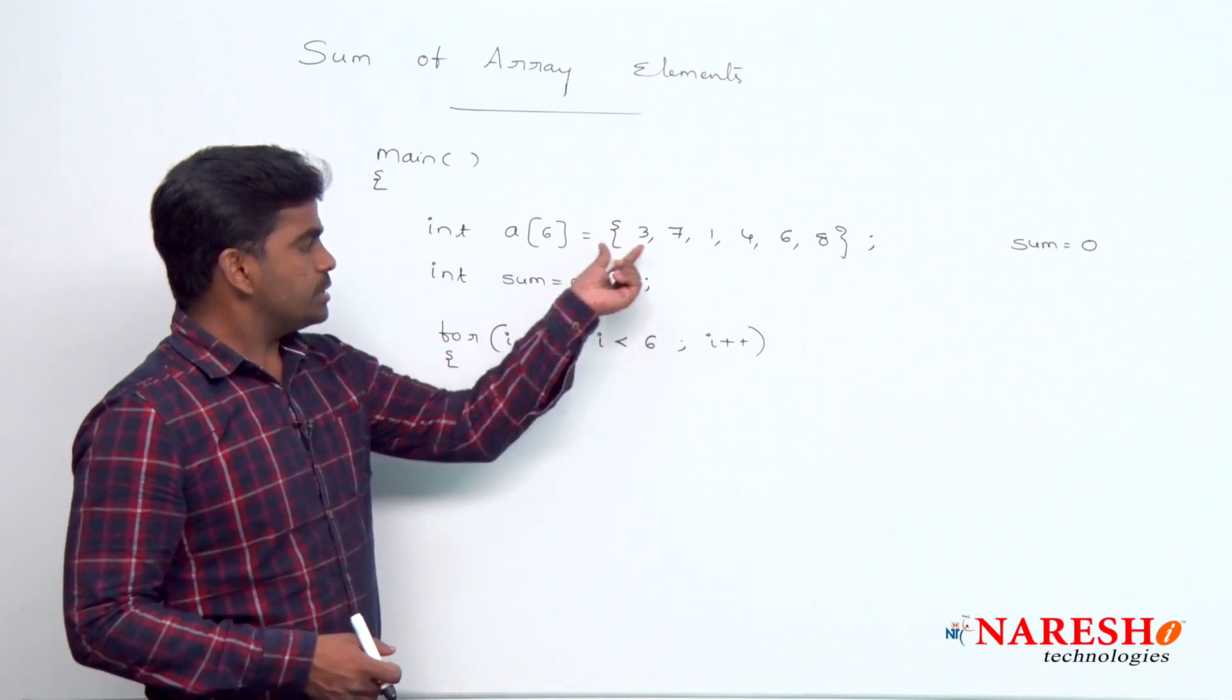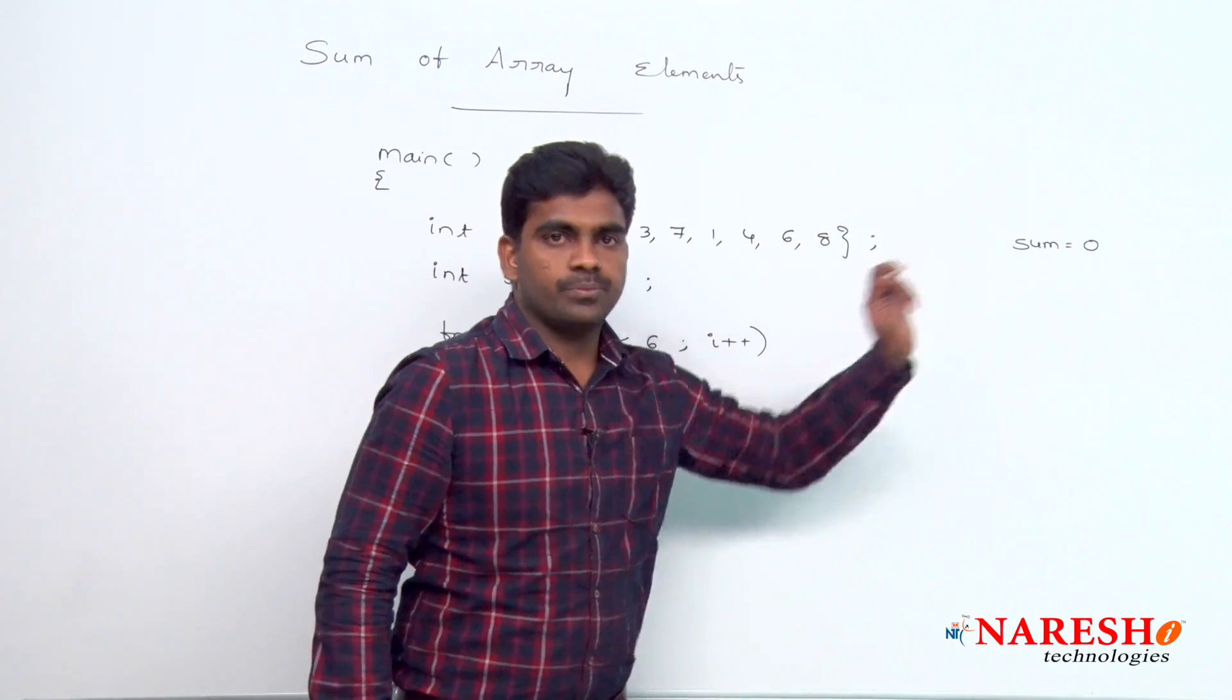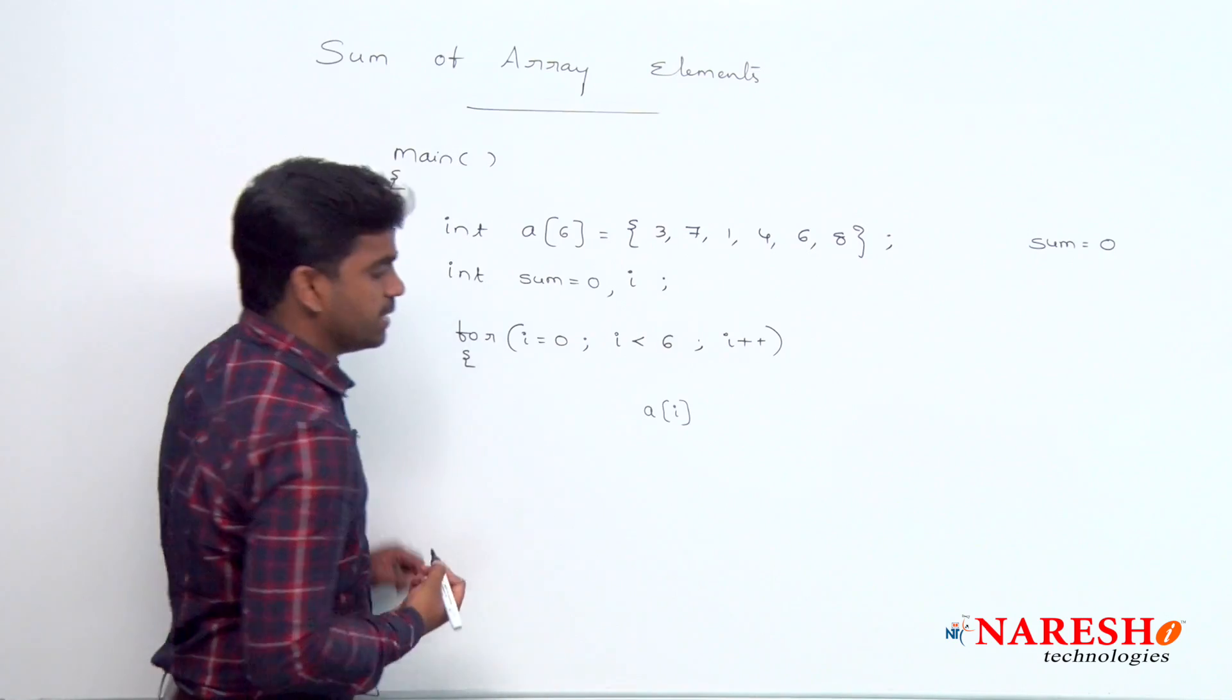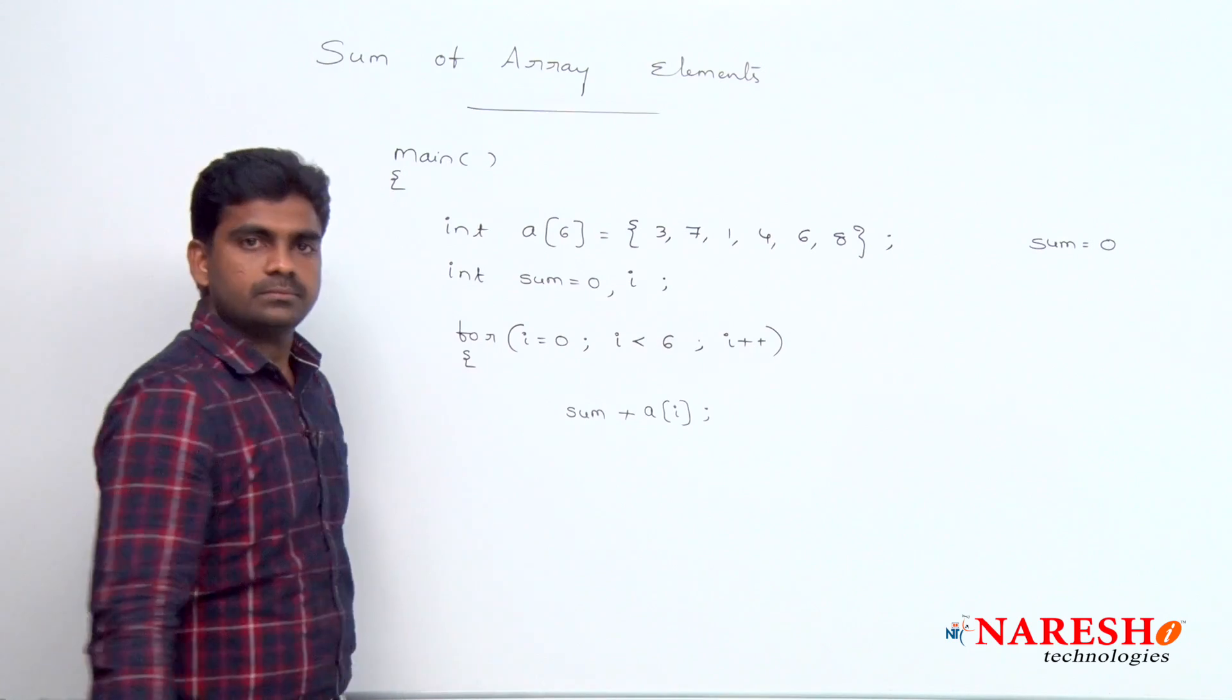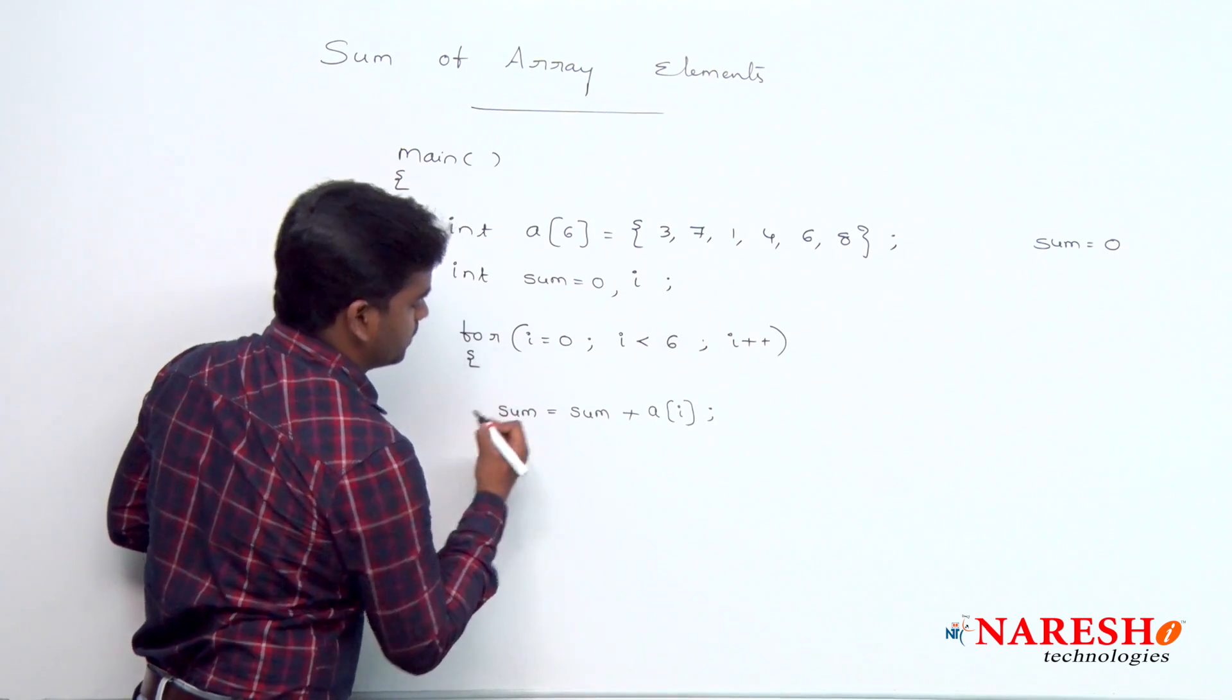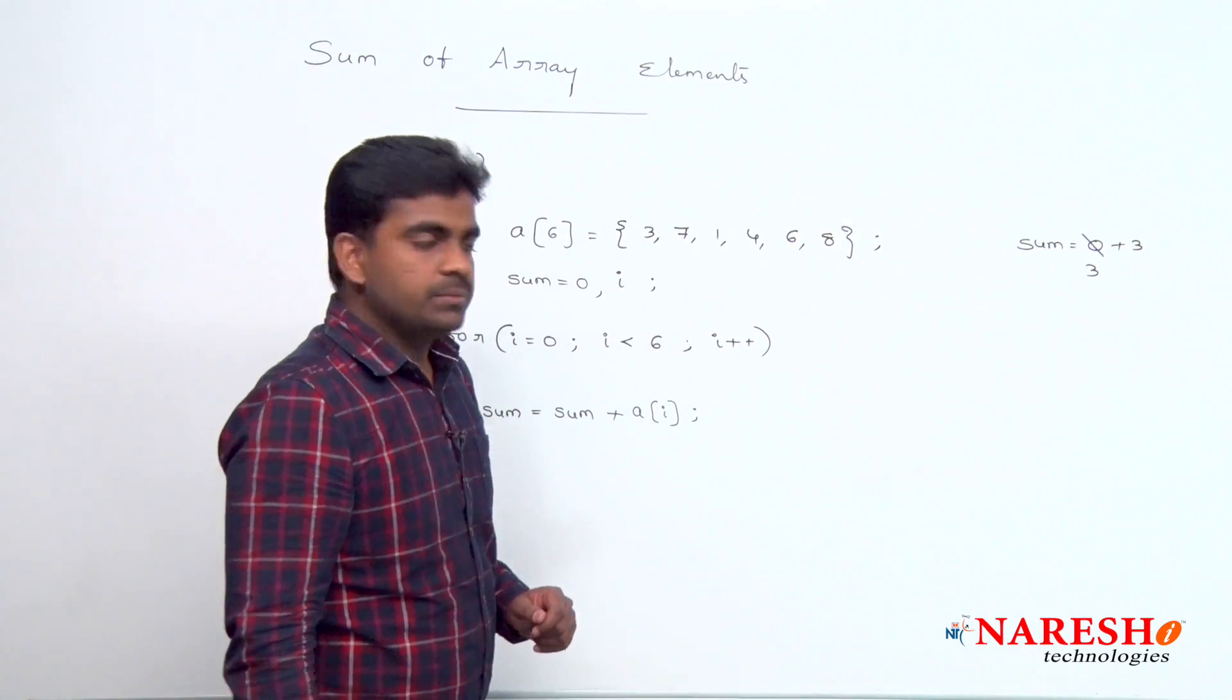When i equal to 0, the control comes inside. Here a of 0, that element is 3. The 3 we are adding to sum. How? Here a of 0th location element, nothing but a of i, we are adding to that variable sum. What is that sum value? 0. To this 0 we are adding 3 and the result we are storing into sum again. Here it is 0 plus 3, so sum value becomes 3.